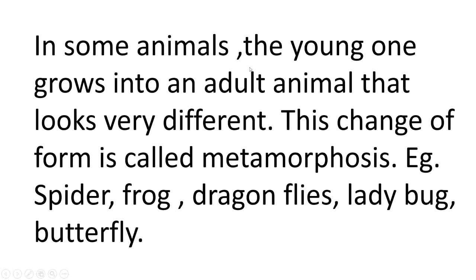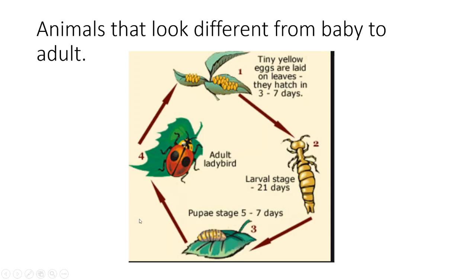So young ones born from the egg look like their mother. But in some animals, the young one grows into an adult that looks very different. This change of form is called metamorphosis. Examples include spider, frog, dragonflies, ladybug, and butterfly. Here is a ladybird — when it was small, a larva, it looked very different from now.